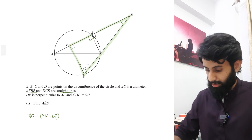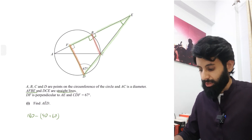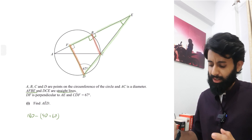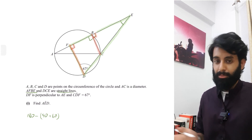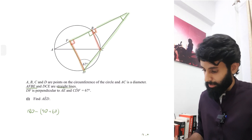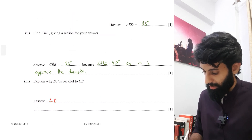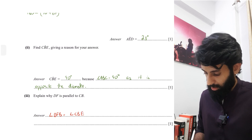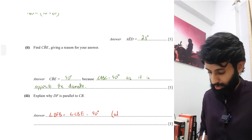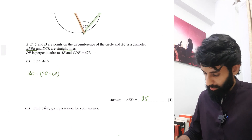Next: explain why DF is parallel to CBE. The reason these two lines are parallel is that angle DFB and angle CBE are both equal to 90 degrees. The concept applied here is corresponding angles. So I'll write: angle DFB equals angle CBE, which equals 90 degrees — corresponding angles. Note: it's corresponding angles, not alternate angles. Each part was worth one mark, so three marks total.